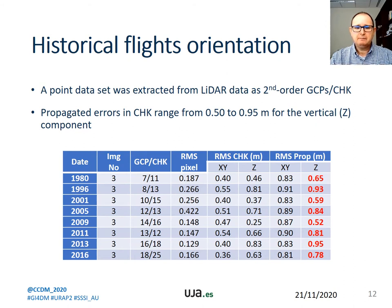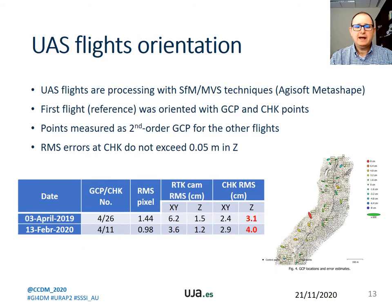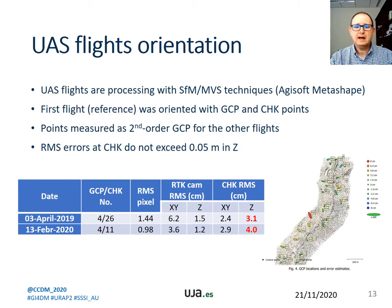The propagated errors in checkpoints range from 0.50 to 0.95 meters for the vertical component. UAS flights are aligned with Structure from Motion multi-view stereo techniques. The first flight, taken as reference, was oriented with GCPs measured in the field with differential GNSS. Additionally, second-order GCPs are used for the orientation of the other flight. The orientation produced root mean square errors at checkpoints that do not exceed 5 cm in the vertical component.